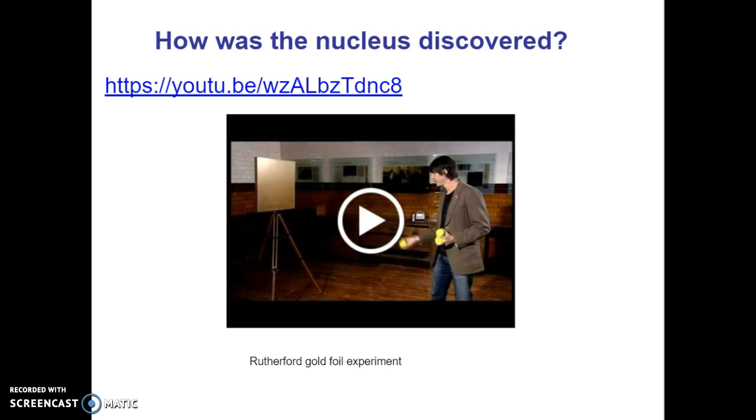But when this experiment was actually done, shooting these relatively heavy helium nuclei at gold foil, most of them went straight through, but then some were severely deflected. In fact, some were deflected so much they went right back to the source of the alpha particles, and that was very strange.